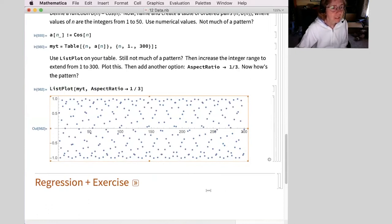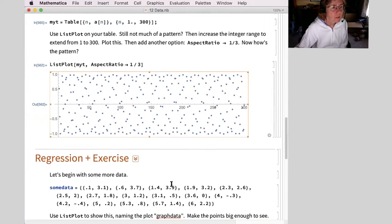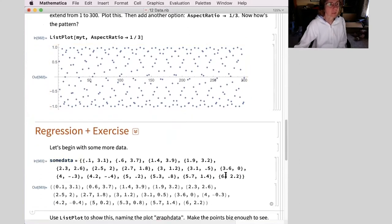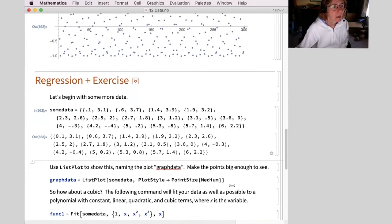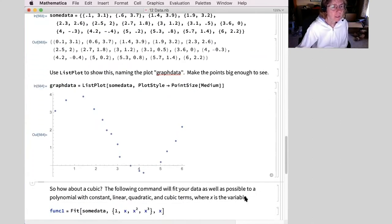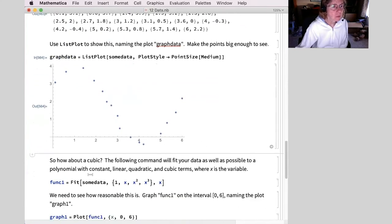All right. Next section, finding models. So some data. I just put stuff in here this time that we can play with. I'm going to use, I want to use list plot to look at this, but first I'm going to name this two and put in medium sized dots. Now I have a sense of what this looks like. Cubic seems reasonable.